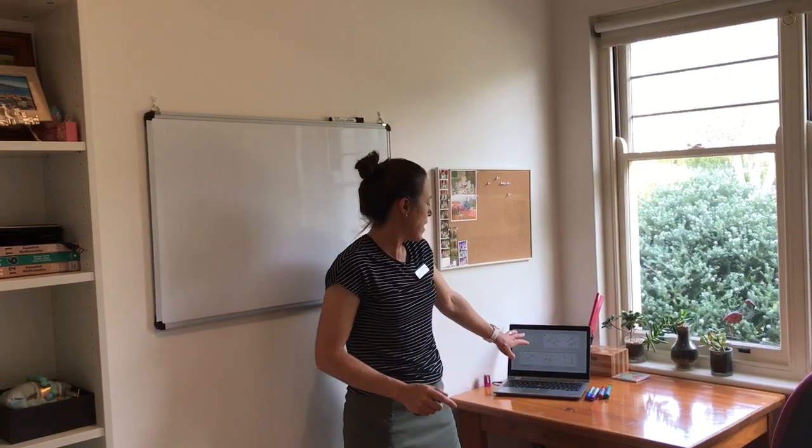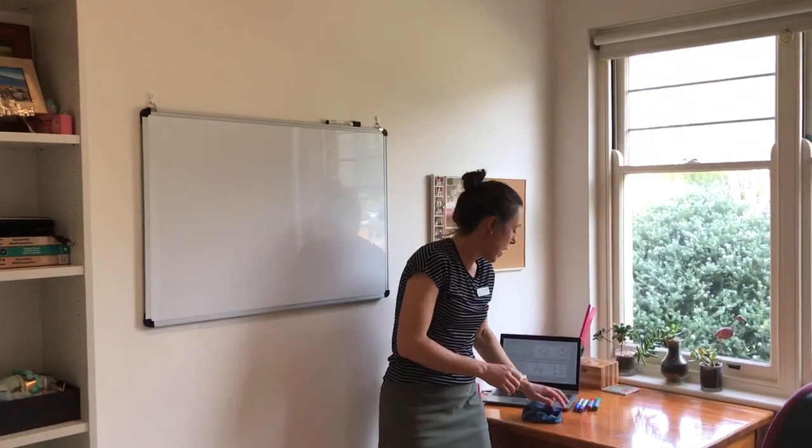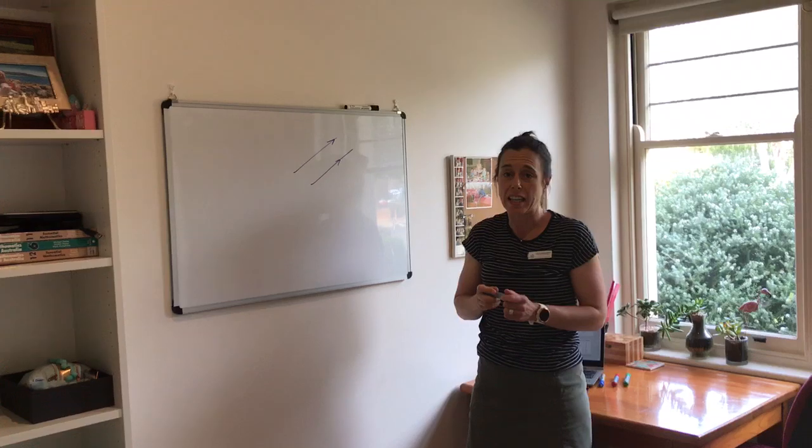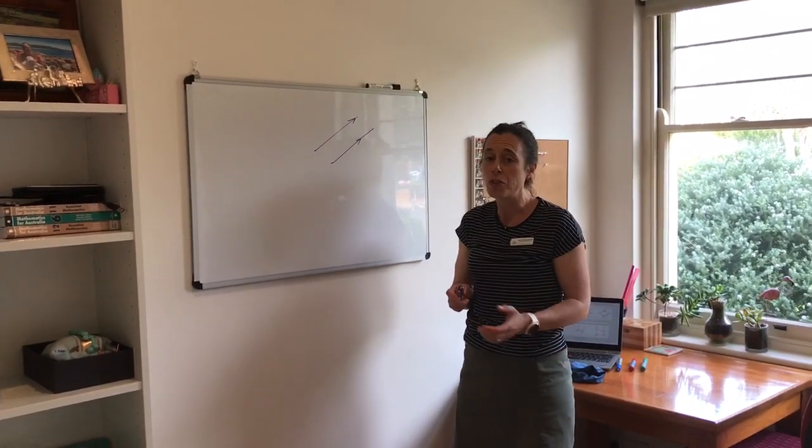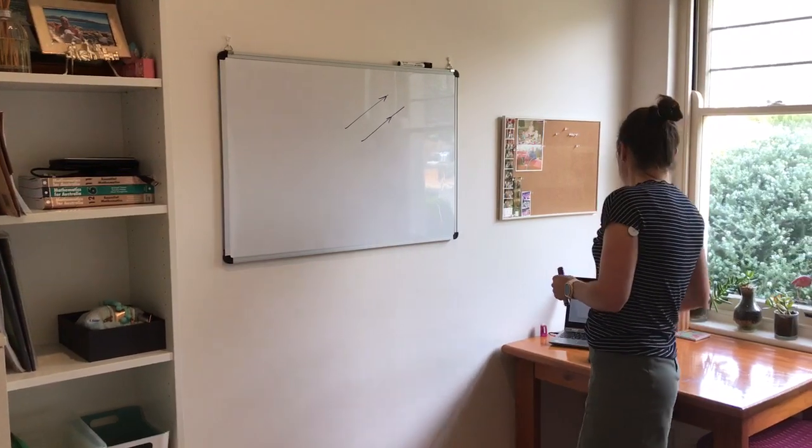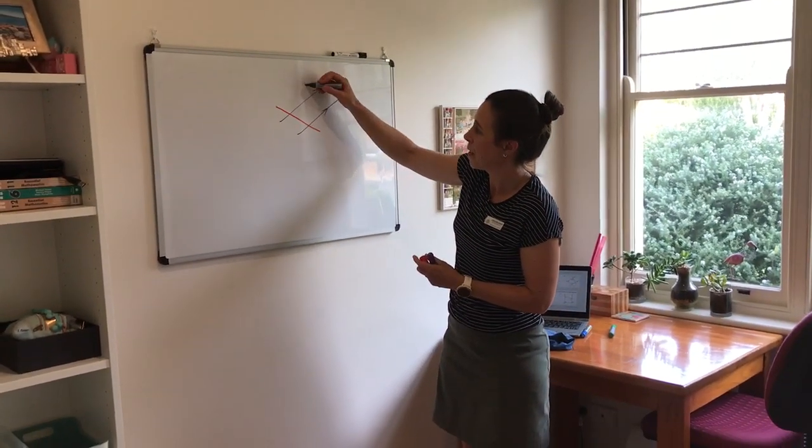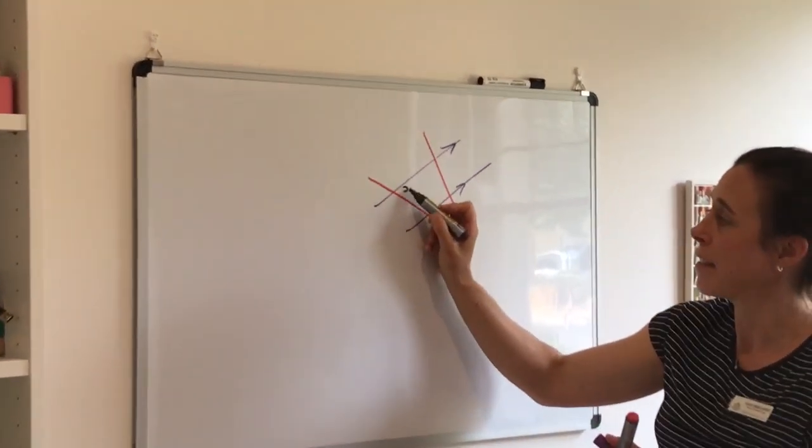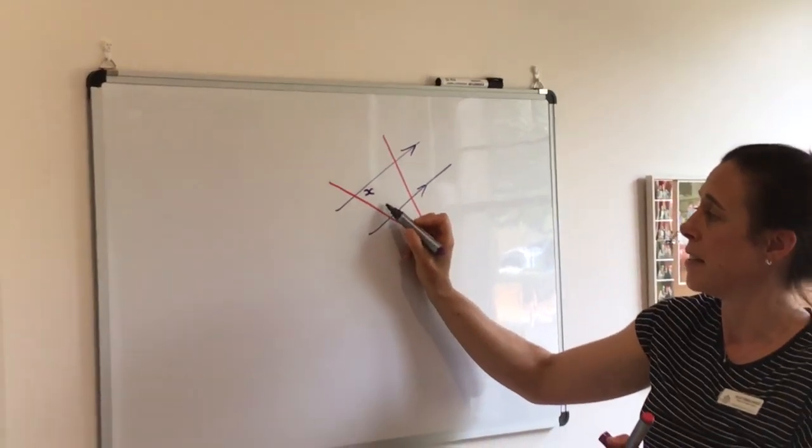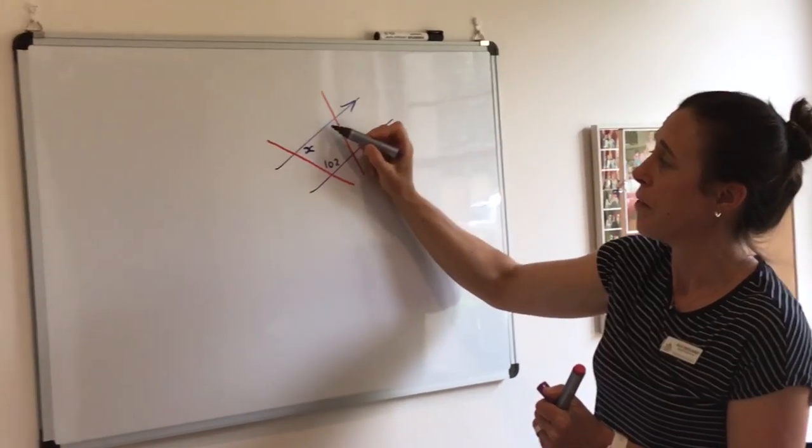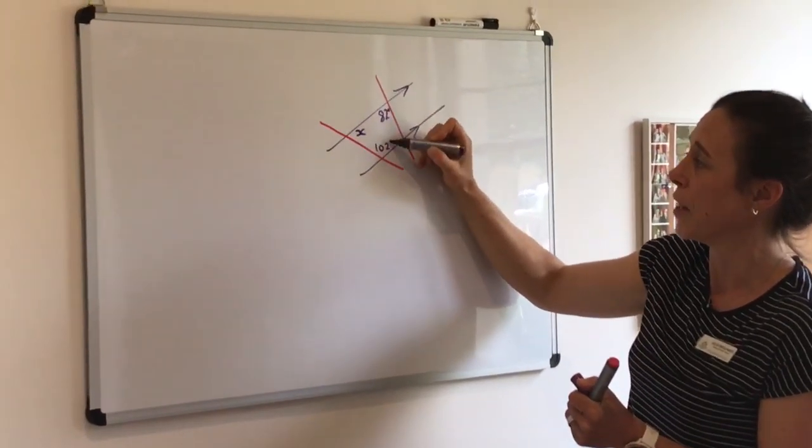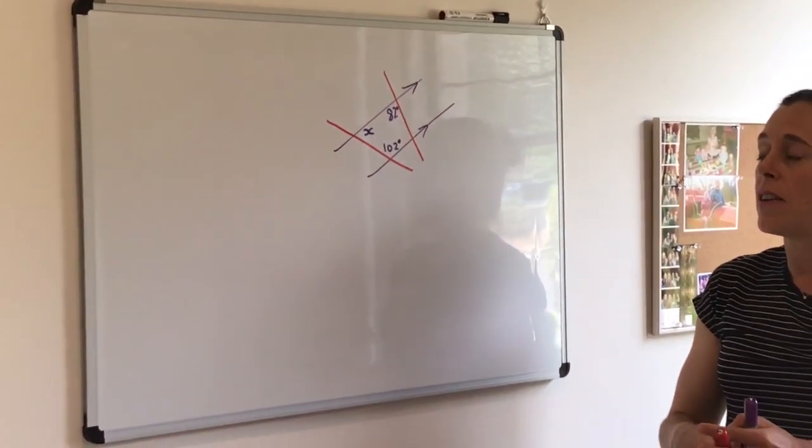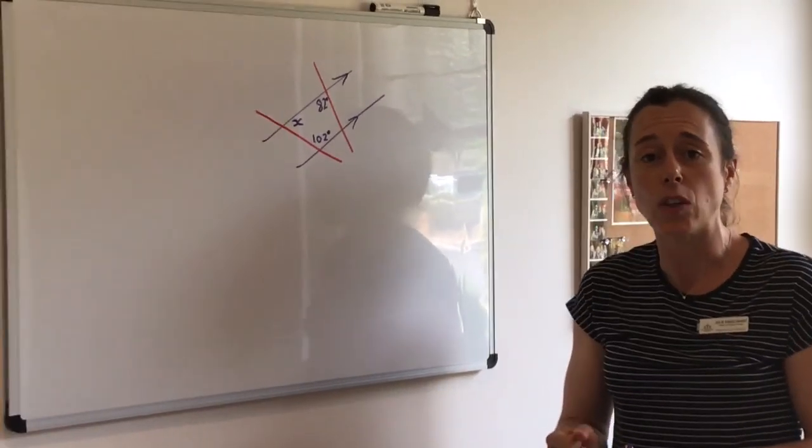Now, just when you get to that second page, you'll notice that sometimes you're given more information than you actually need, and you need to decide what information to use and what information to ignore. So if we have a scenario like this, and we might be asked to find x, and we're told that this angle here is 102 and this angle here is 82 degrees.